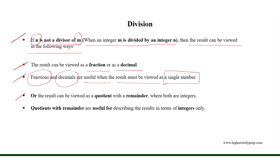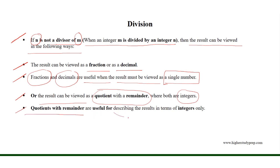Or, the result can be viewed as a quotient with a remainder, where both are integers. Quotients with a remainder are useful for describing the result in terms of integers only.